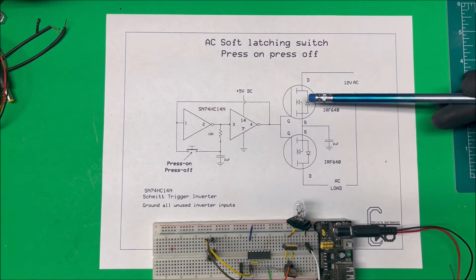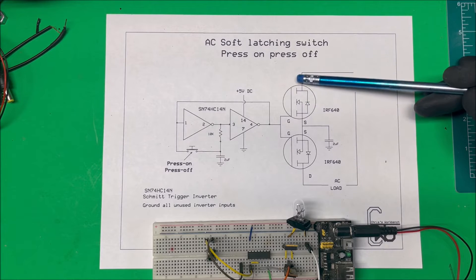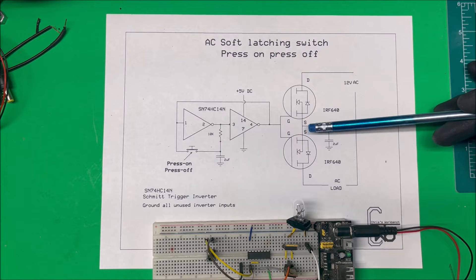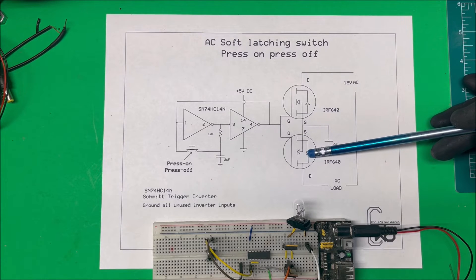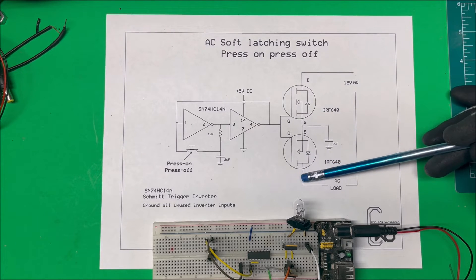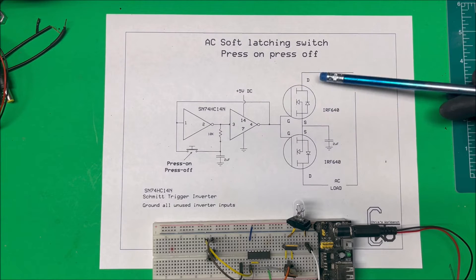What happens if the current's going this way: it'll go through this from drain to source. But here it can't go from source to drain through here, but it can go through the diode that's in here. So it'll run through this one and through this diode. And then when it's going in the other direction it'll go through this MOSFET and then through this diode here, and that's how the AC is going to work.